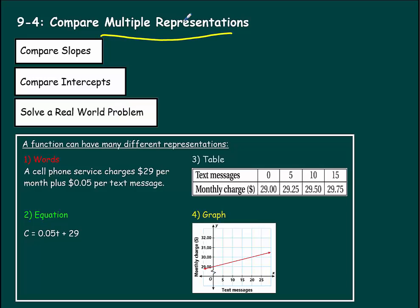Here's the main idea for today: multiple representations. A function can have many different representations, meaning you can explain the function in many different ways. For example, here's our first representation in words: a cell phone service charges $29 per month plus $0.05 per text message. If we write that as an equation, your cell phone bill would be $0.05 times the number of texts plus the $29 you pay per month. You could also show that with a table — zero text messages would be $29.00, five text messages would be $29.25, and so on. This shows the same information.